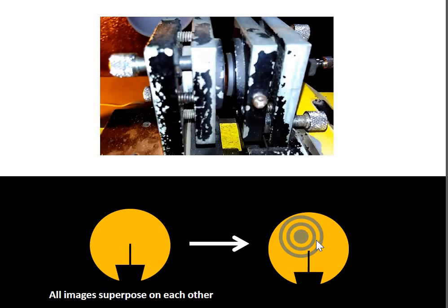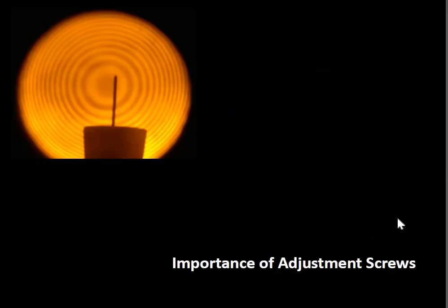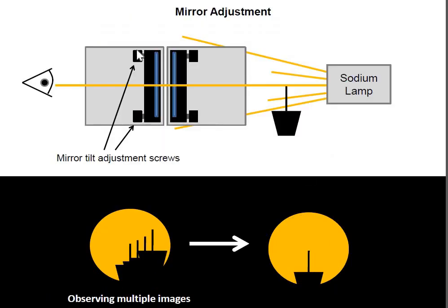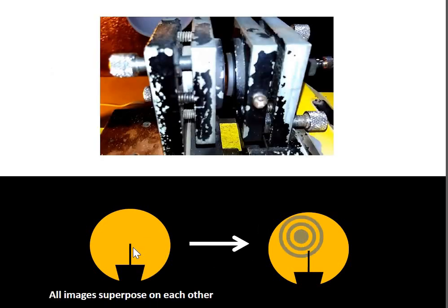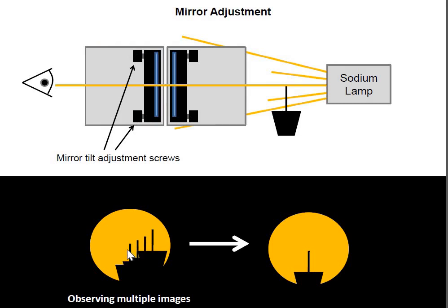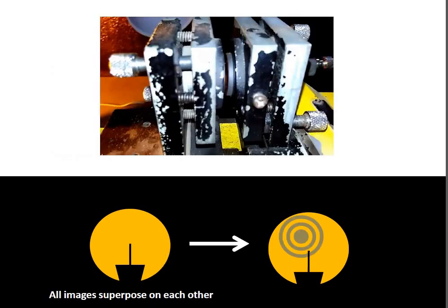The locus of constant phase gives bright fringes and dark fringes, forming the total fringe system. We use the four screws on the mirrors to superimpose the pins. When all the images superimpose on each other, the mirrors are parallel to each other and we will see the fringe system.